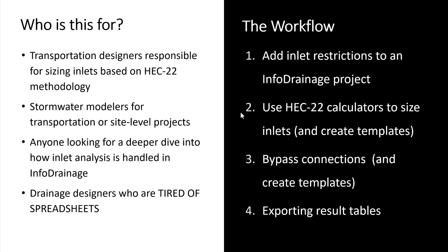A typical inlet design workflow might be to export your catchment area parameters to a spreadsheet, then use that spreadsheet to start at one end of the project, size your inlets, calculate the bypass and spread depth, use that information to move to the next inlet, and so on. Once that's done in the spreadsheet, that information and those inlet types are manually translated to a design package like Civil 3D for final plan production. However, if anything changes — if a catchment area shifts, changes in size, or changes in impervious value — that catchment area will need to be re-entered into the spreadsheet, which may cause cascading effects, and then the manual process of getting those inlet types into Civil 3D needs to be reproduced.